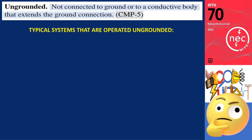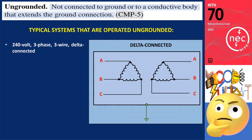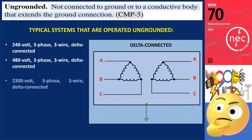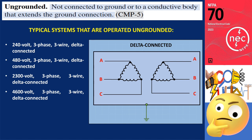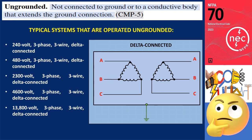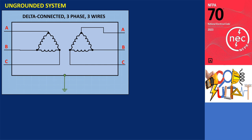Some common examples of systems that are operated ungrounded include 240-volt, three-phase, three-wire delta-connected systems; 480-volt, three-phase, three-wire delta-connected systems; 2,300-volt, three-phase, three-wire delta-connected systems; 4,600-volt, three-phase, three-wire delta-connected systems; and 13,800-volt, three-phase, three-wire delta-connected systems. Typically, ungrounded systems are delta-connected, although there are some cases where Y-connected systems can also be ungrounded. In practice, delta-connected, three-phase, three-wire systems are commonly used when an ungrounded system is desired.